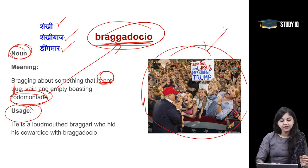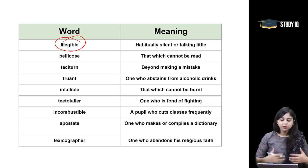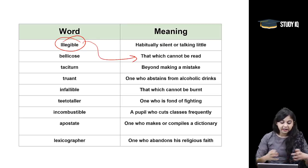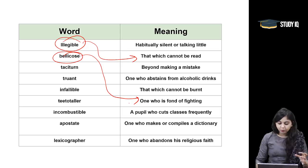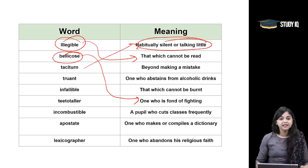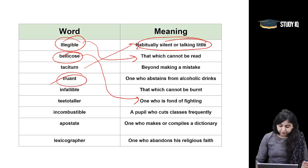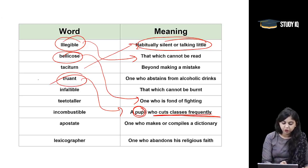Moving on to the quiz of the day. Illegible — something that cannot be read because it is written in very bad handwriting; it is not legible. Bellicose — someone who is very fond of fighting, belligerent. Taciturn — habitually silent, talking very little. Truant — a student who bunks or cuts classes frequently.